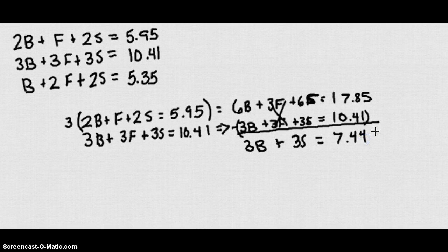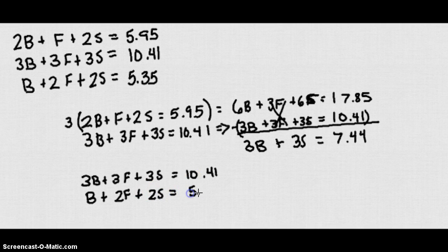So now we have an equation with two variables involved. Let's take a look at the other two equations we can use there. We have 3B plus 3F plus 3S equals 10.41. We have B plus 2F plus 2S equals 5.35.